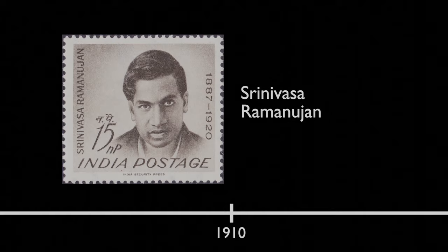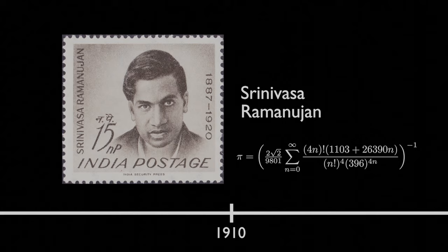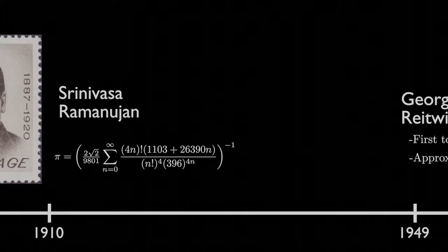The first improvements to our approximation of Pi in the 20th century came in 1910 from an Indian mathematician, Srinivasa Ramanujan, who found multiple rapidly converging power series formulas for Pi. The most popular of these being the Ramanujan-Sato series.